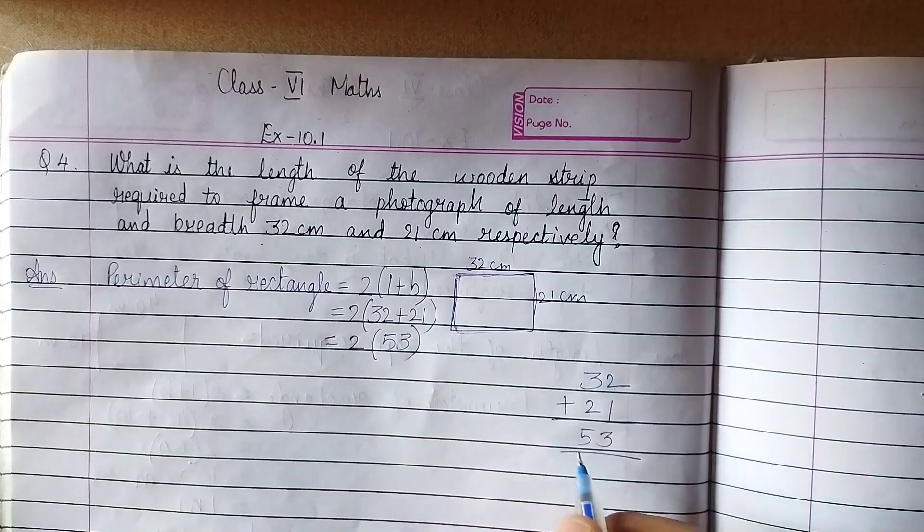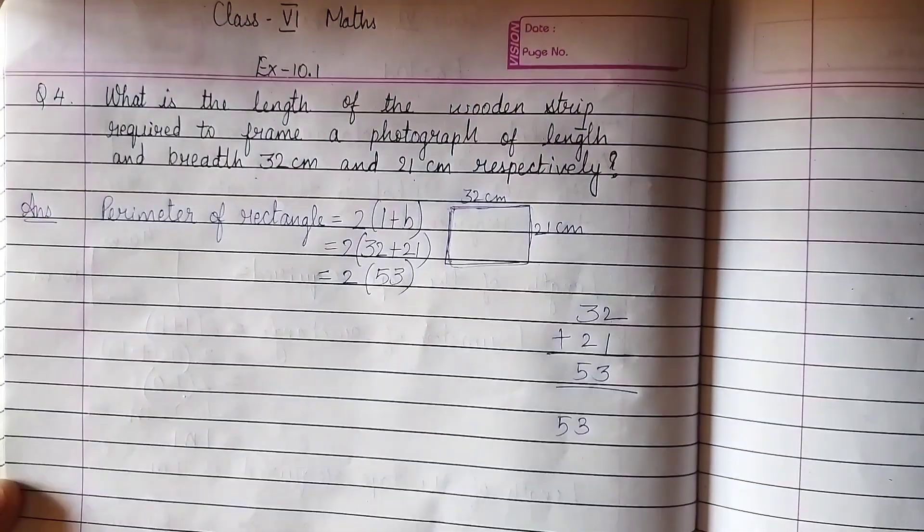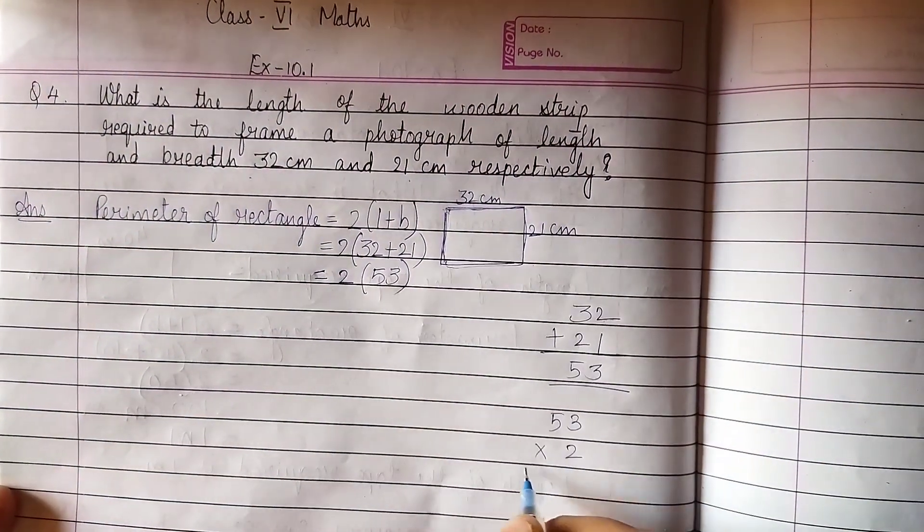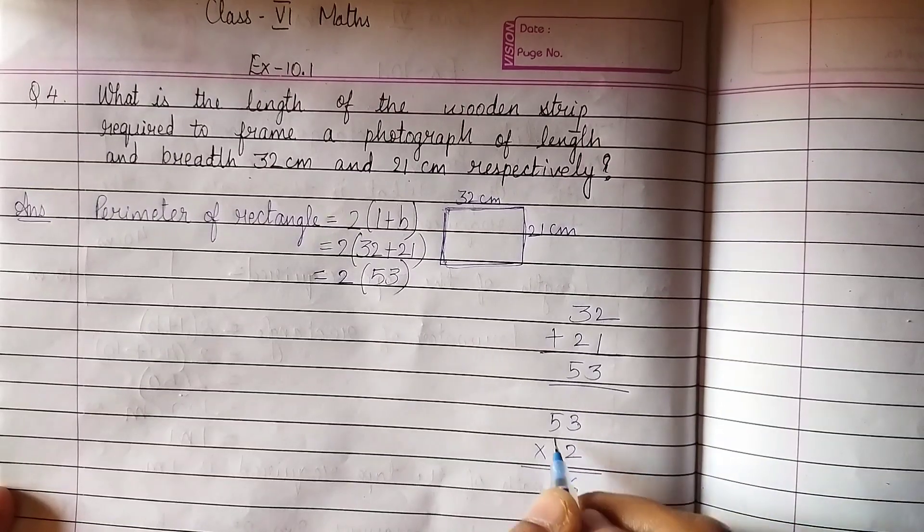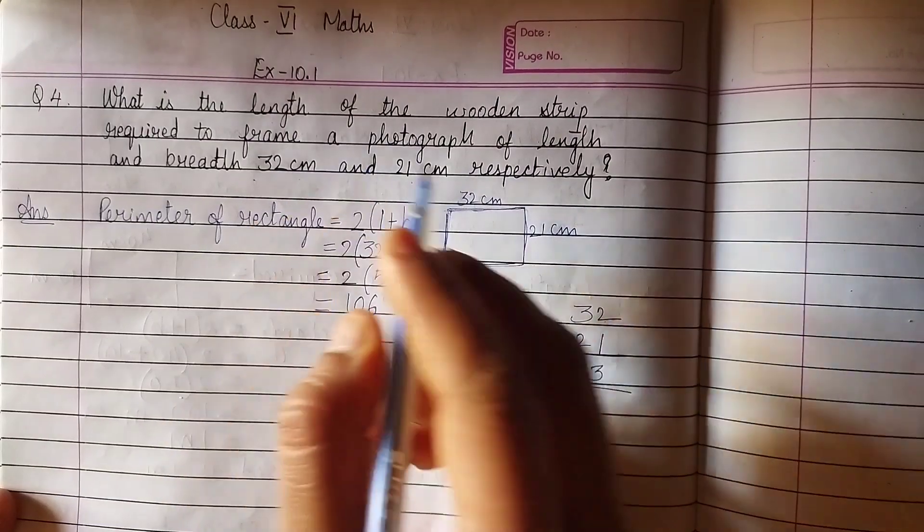Now, 53 2s are? 2, 3s are 6, 2, 5s are 10. So the answer is 106 cm.